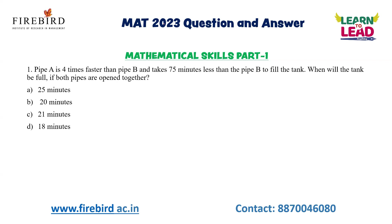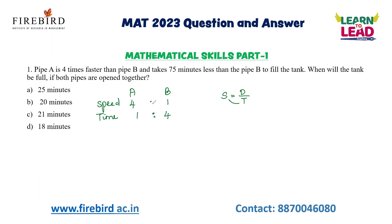Let us see the first question. If pipe A is 4 times faster than pipe B, the speed of pipe A is 4 times faster than pipe B. So if I take 1 and here the value will be 4. The relationship between speed and time is inversely proportional — speed equals distance by time. So if I take time, inverting the ratio gives 1 to 4 as the time values. The time difference between the two is 75 minutes — pipe A takes 75 minutes less than pipe B to fill the tank.